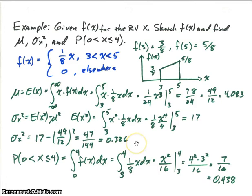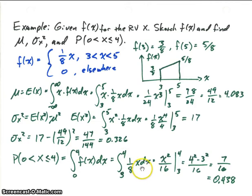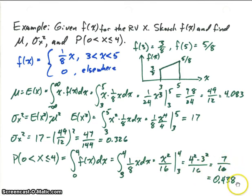Now we're going to find the probability that x is between 0 and 4. The probability is the integral from 0 to 4 of our density function. Since it's non-zero only from 3 to 5, we integrate from 3 to 4 of (1/8)x. We get x squared over 16, evaluated from 3 to 4. Plugging in those values, we get 7/16, or approximately 0.438.